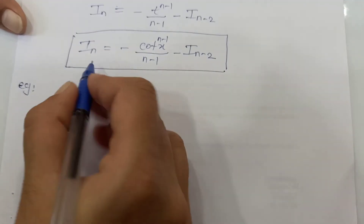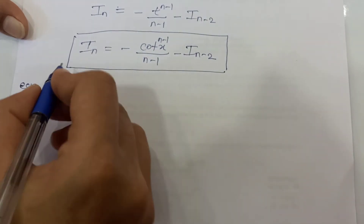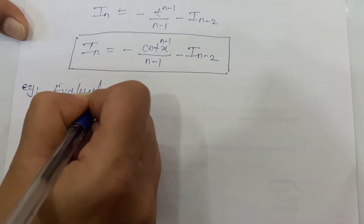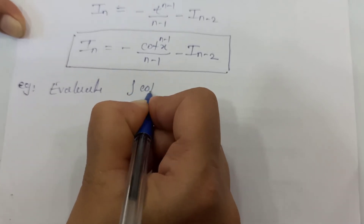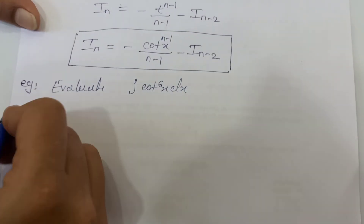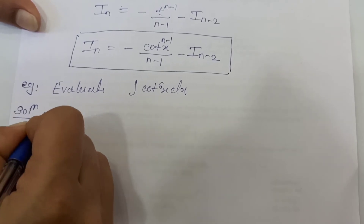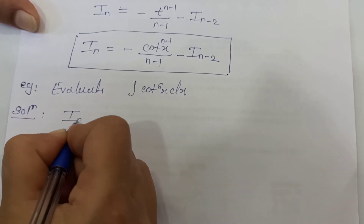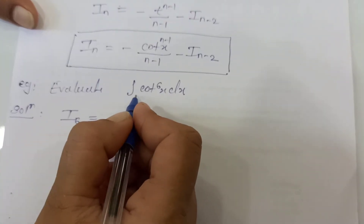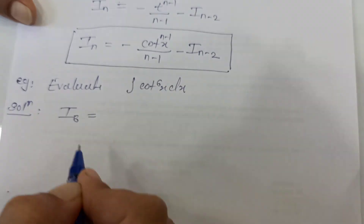Now let us take one example based on reduction formula 4. We evaluate integration of cot raised to 6x dx. In notation, we need to find I₆, where I₆ equals integration of cot raised to 6x dx. Apply the formula.